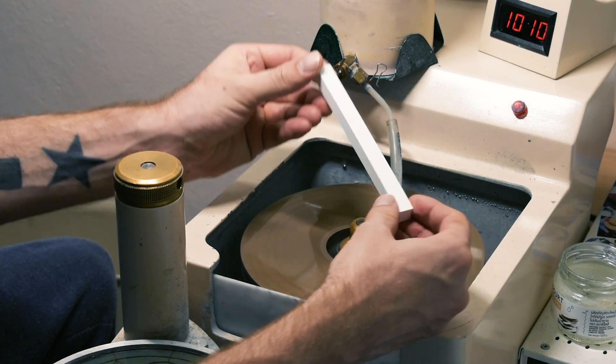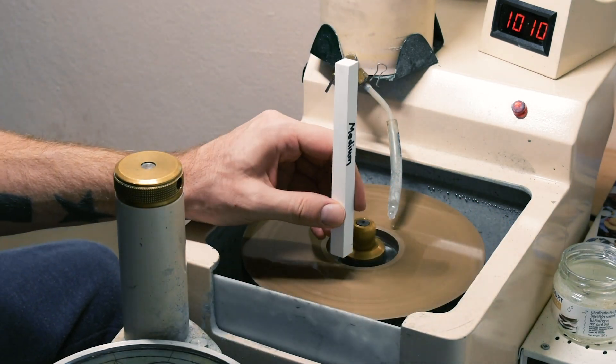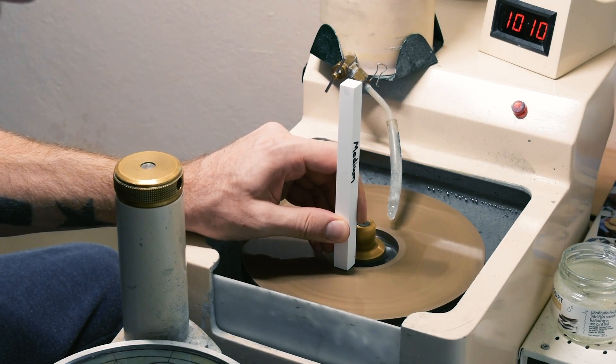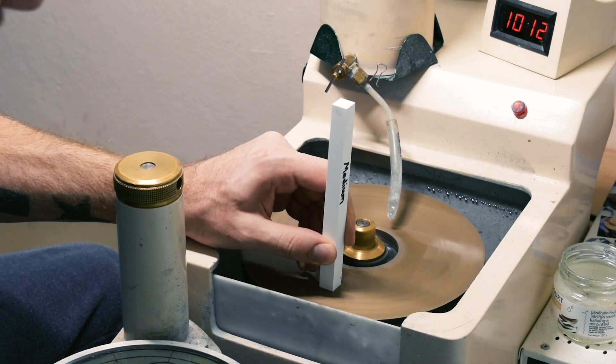In this case, this is a medium grit alumina oxide dressing stick, which is the stick that's advised for use with this particular Adamus lap.